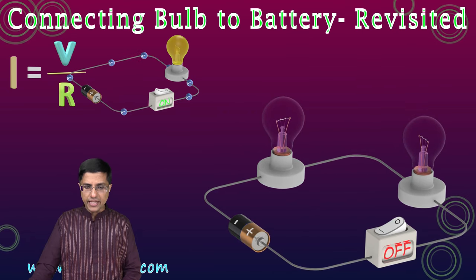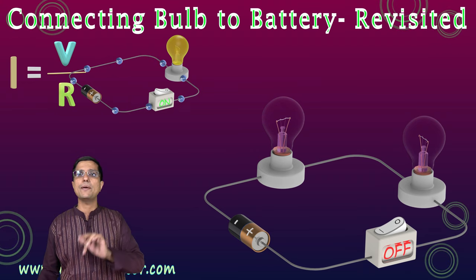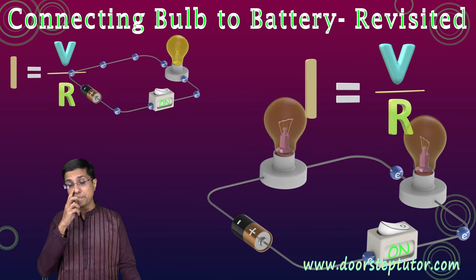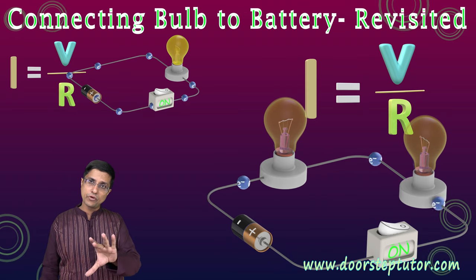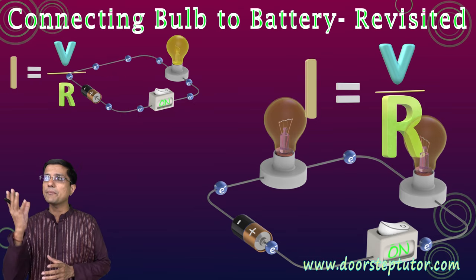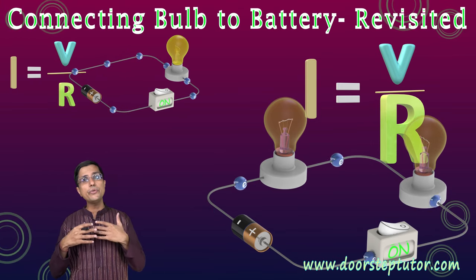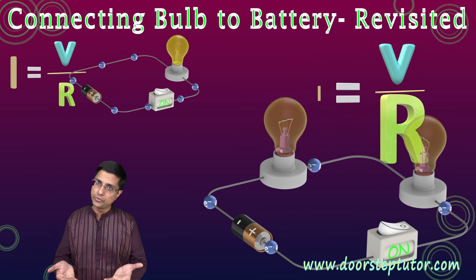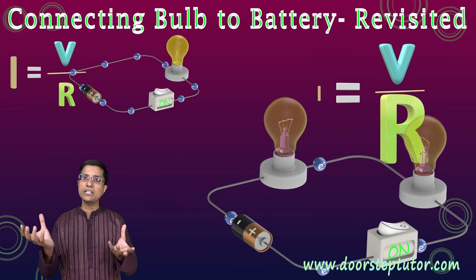Now the other scenario: what if the battery remains the same but instead of one lamp I connect two lamps to the circuit? The voltage remains the same but the resistance has doubled. Due to this increased resistance, the current reduces. Due to the reduced current, the temperature inside the lamp reduces and the individual lamps become dim.